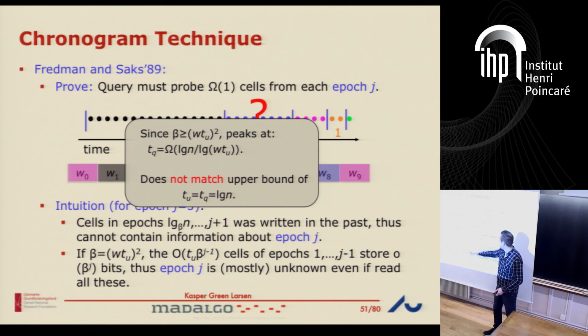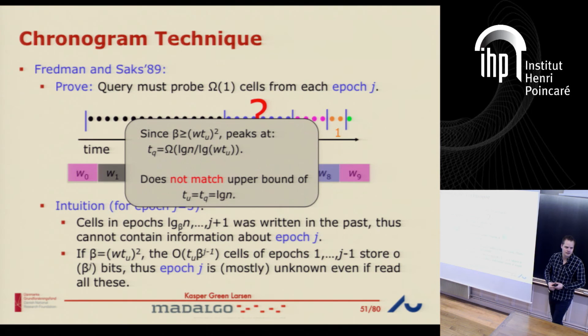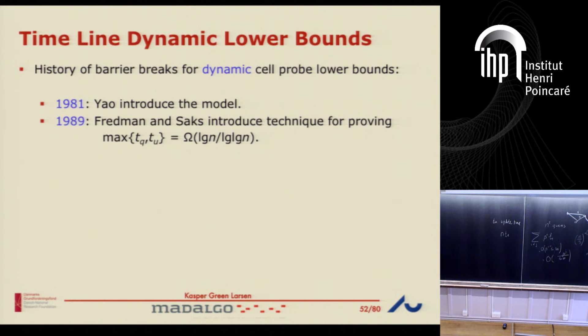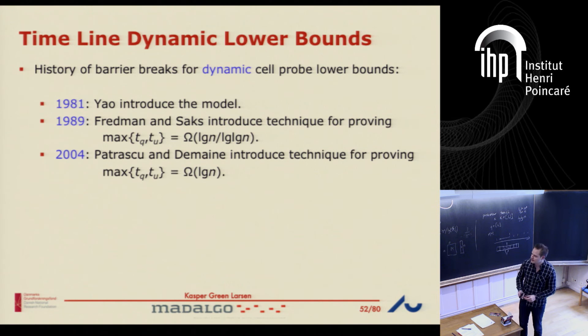The upper bound for this problem had log n, not log n over log log n. So this chronogram technique cannot really prove the tight lower bound. That brings us to the next technique — by Patrascu and Demaine from 2004. It took about 15 years to move from log n over log log n to log n. Progress is slow, but it's hard.